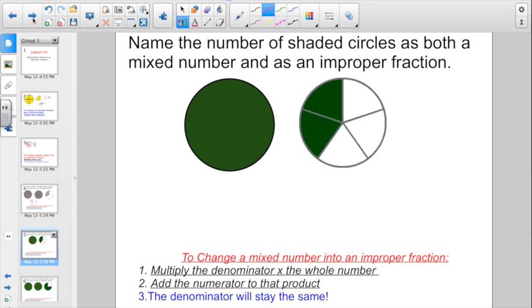Let's try it again here. Name the number of shaded circles as both a mixed number and as an improper fraction. So I have one whole, and then it looks to me like I have 2 fifths here. So the mixed number would be 1 and 2 fifths. Let's go ahead and get this mixed number changed over to an improper fraction. Multiply. 5 times 1 would be 5. And then go ahead and add. 5 plus 2 more. That's going to give us 7. The denominator stays the same. We have 7 fifths.